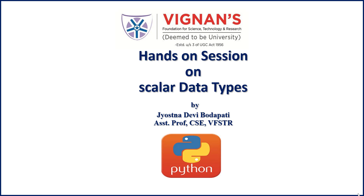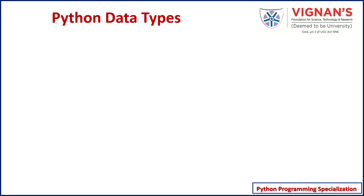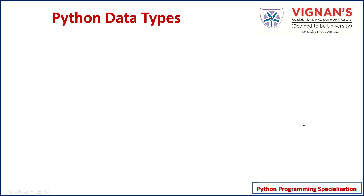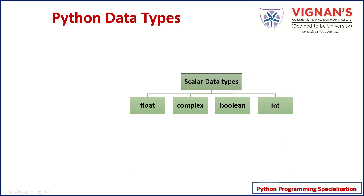In this video, we'll see some of the details related to the Python data types. In the earlier videos, when we discussed about the variables, we already have seen some of the details related to Python data types. Unlike other programming languages, you need not pre-declare variables in Python. Depending on the type of data assigned to variables, their data type will be decided. Python supports numerous data types to support storing a variety of data — scalar data, sequential data, mapping type, and even set type. In this video, we'll see the data types that support scalar type of data storage in Python.